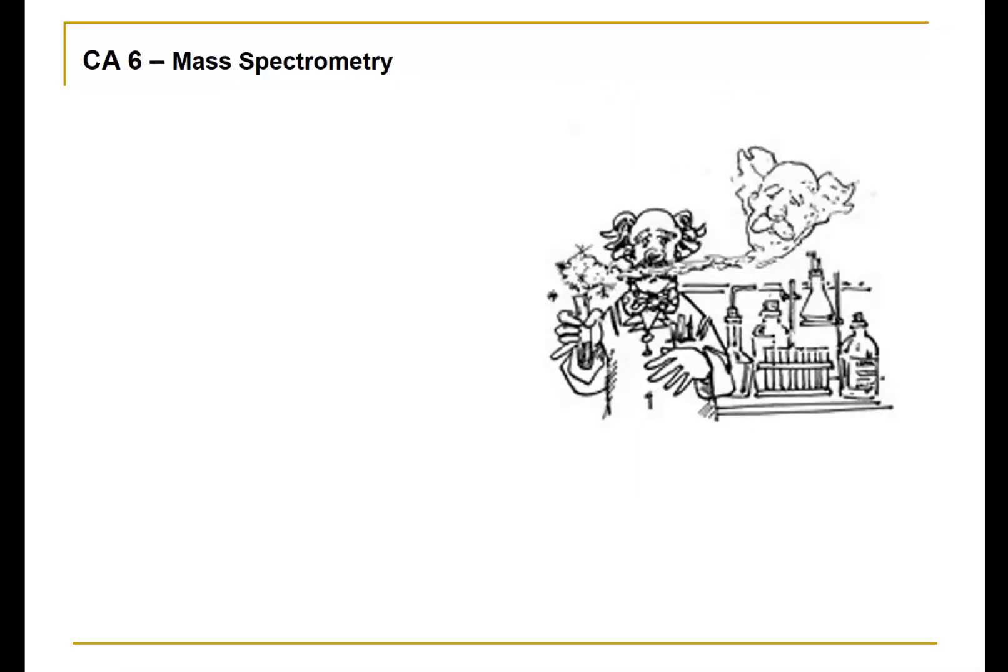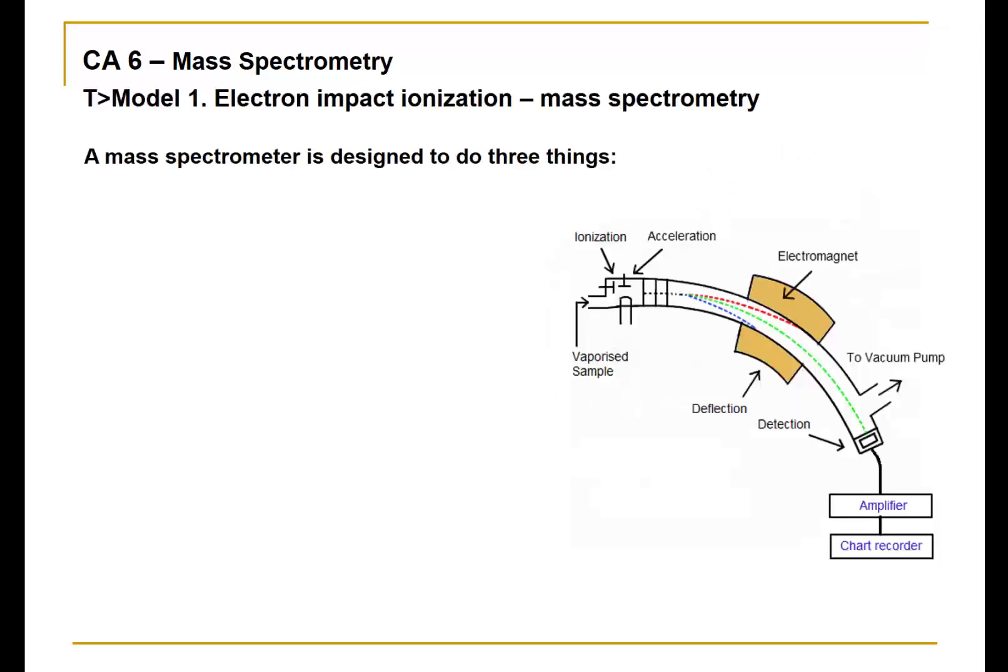In ChemActivity 6 and the corresponding sets of videos, we will explore how the technique of mass spectrometry can be used to determine the molecular mass and, to some degree, some structural features of a molecule. Mass spectrometry is an analytical technique that is especially important in organic chemistry.